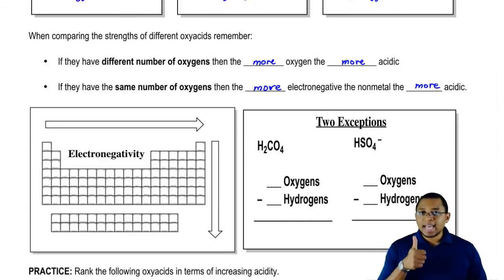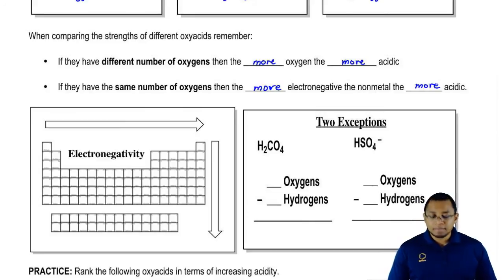Again, first when comparing oxyacids, you look at oxygen. If they have different numbers of oxygen, then simply the one with more oxygen will be stronger. If they have the same number of oxygens, then whichever one has the more electronegative nonmetal would be more acidic.